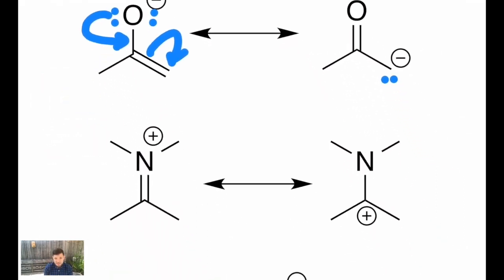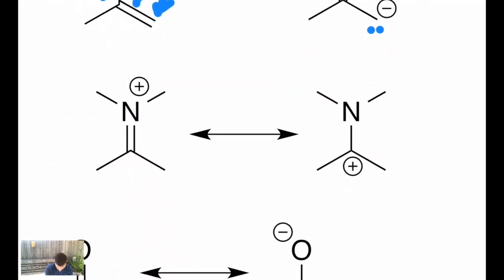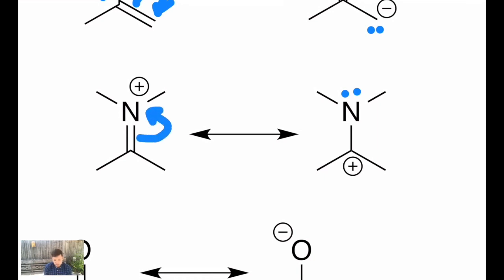Below that we get what's called an iminium ion. This has a lone pair on the nitrogen in the contributor on the right, while the one on the left actually has no lone pairs. So I draw an arrow from the carbon-nitrogen pi bond up to the nitrogen, and that's it — only one curved arrow. Sometimes it only takes one.